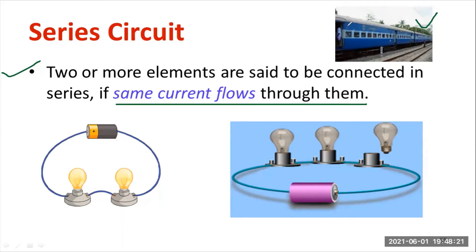The ending point of one bogie is connected to the beginning point of another bogie. Similarly, the ending point of that bogie is connected to the beginning point of the next. It has been connected in cascaded, or serial, fashion.